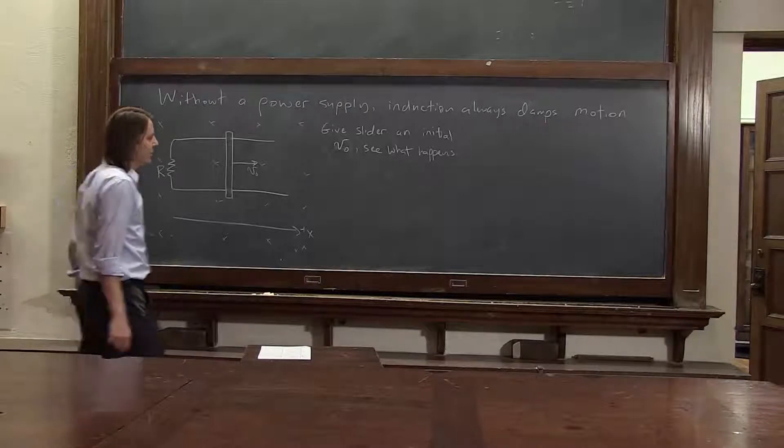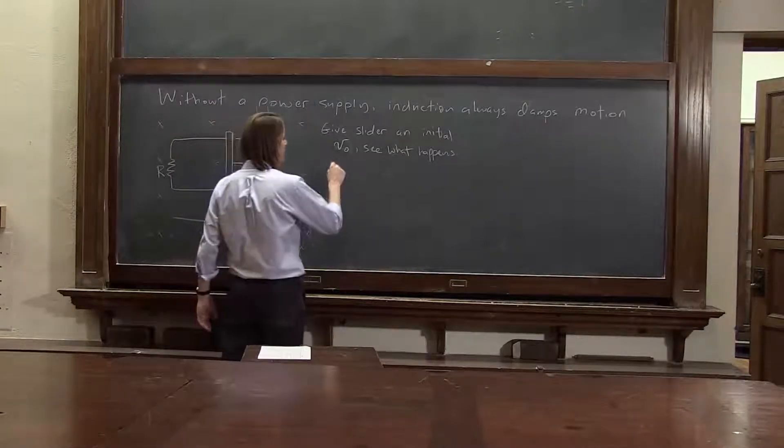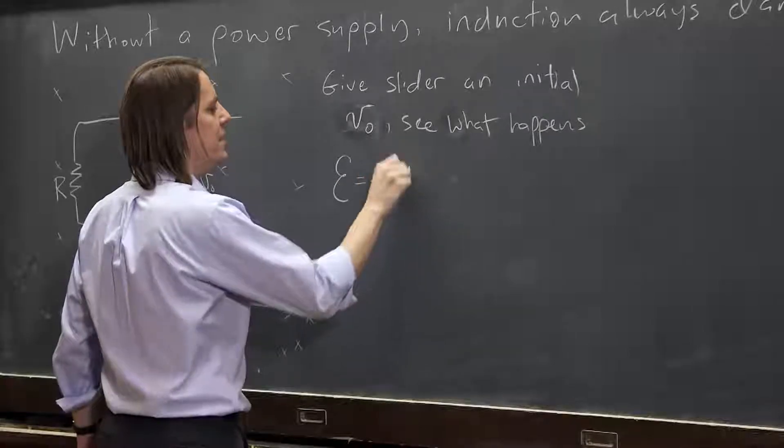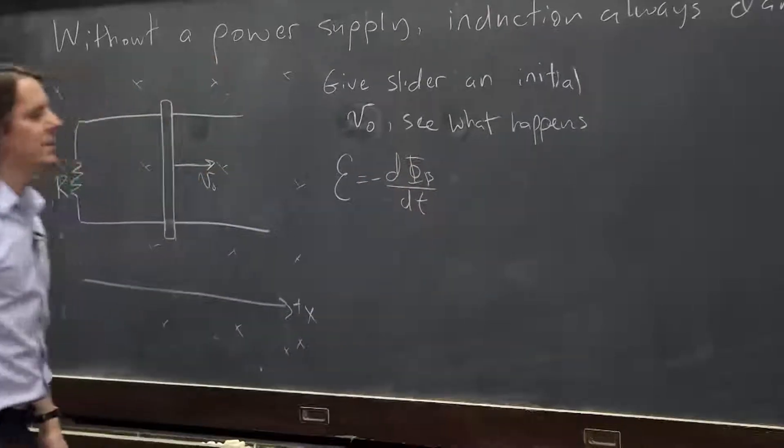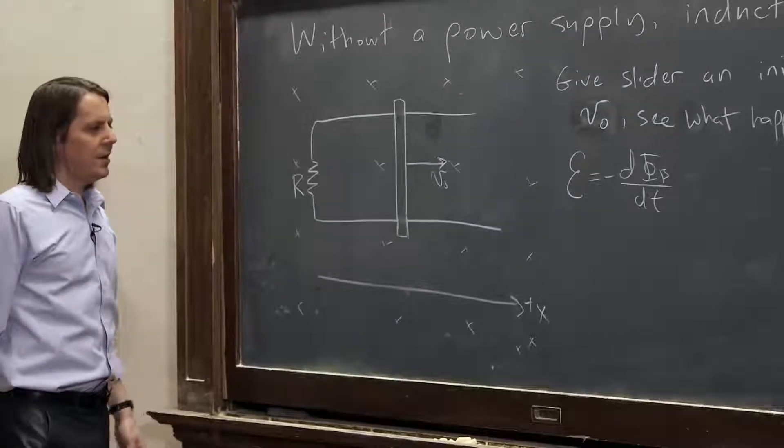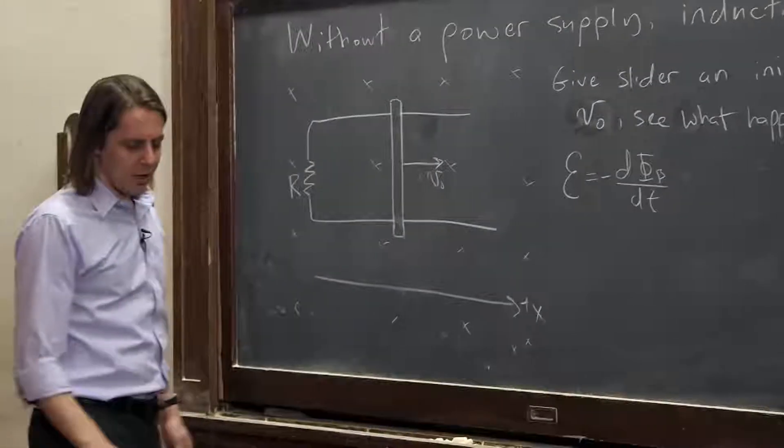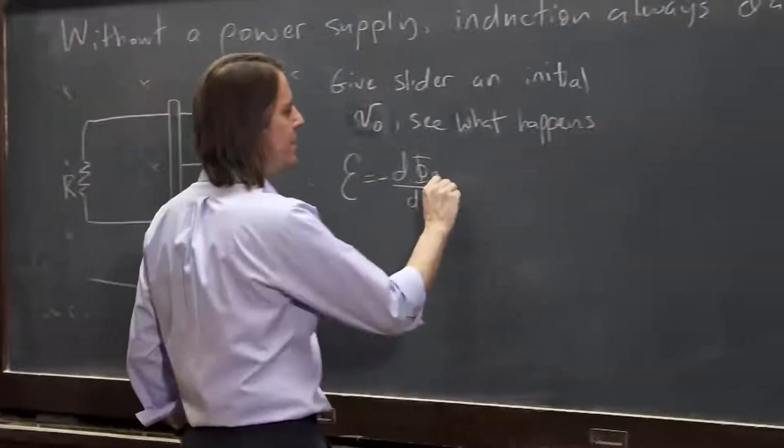So in this case, we would probably want to think about Faraday's law of induction: EMF is minus d phi b dt, and it's just like last time. It ends up being minus blv.